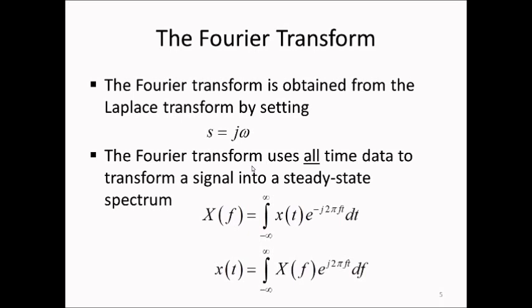The Fourier transform uses all time data from minus infinity to plus infinity to transform a signal into a steady-state spectrum. The spectrum X(f), the Fourier transform of x(t), is computed as the integral from minus infinity to plus infinity of x(t) multiplied by e^(−j2πft) dt. There is also an inverse transform which computes x(t) as the integral of X(f) times e^(j2πft) df. Note the plus sign in the exponent for the inverse transform, whereas there is a minus sign for the forward transform.